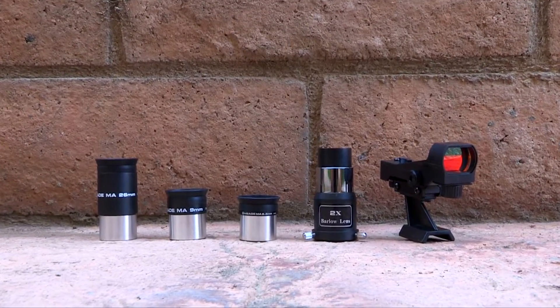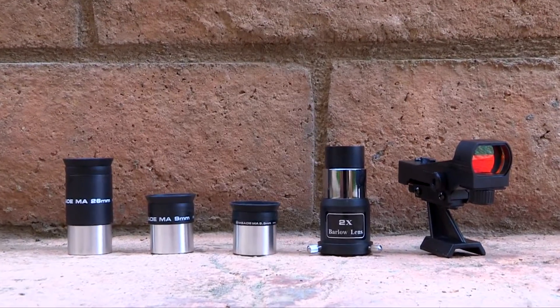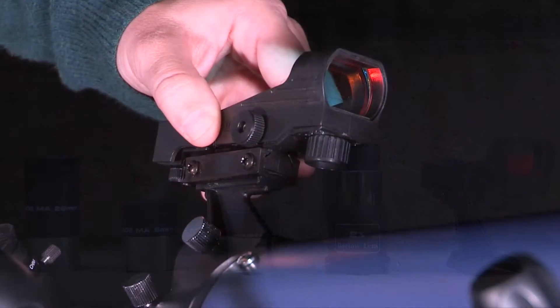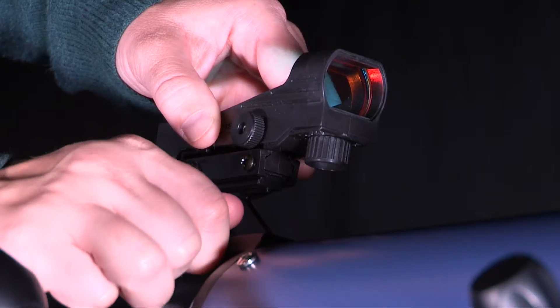The StarPro AZ comes with three 1.25 inch eyepieces, a 2x Barlow lens, and a red dot viewfinder to easily help you locate objects in the night sky.